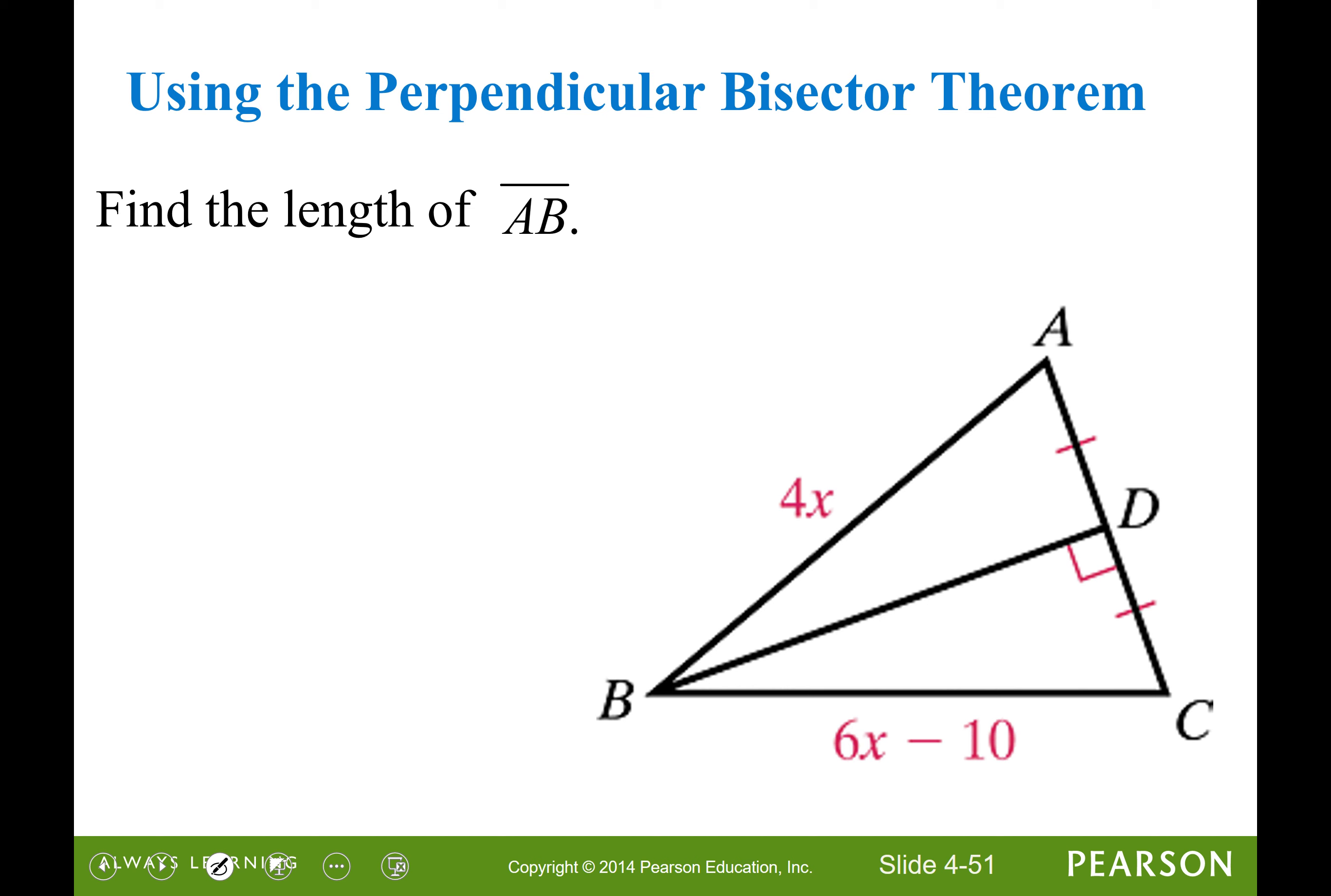Let's use the perpendicular bisector theorem to find the length of segment AB. So if you need to redraw this or twist your paper so that it looks more like the orientation of the theorem that we first learned, that might help you to apply the theorem. We have BA is equal to BC, and we know that from the perpendicular bisector theorem.